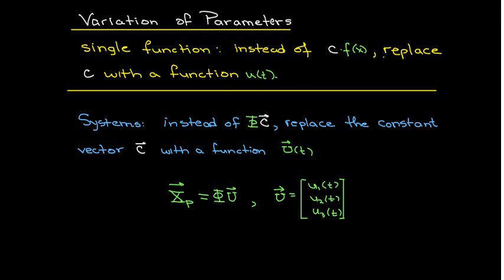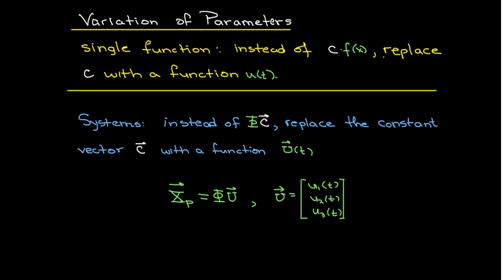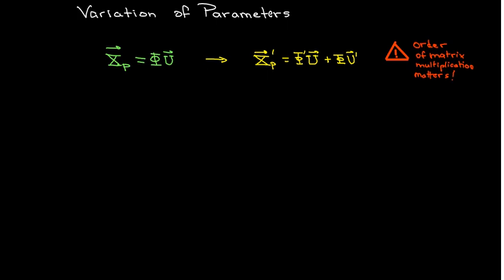We assume our particular solution has the form of Phi times u. Taking the derivative carefully — it's the derivative of the first times the second, plus the first times the derivative of the second. With matrices and vectors, the order of multiplication matters, so Phi always has to come first. If you said u times Phi prime, that would be an undefined operation.